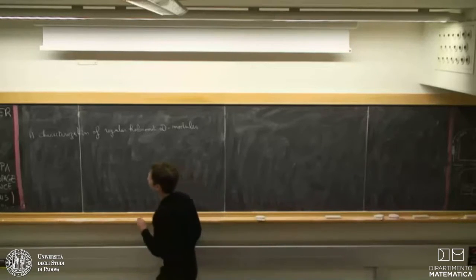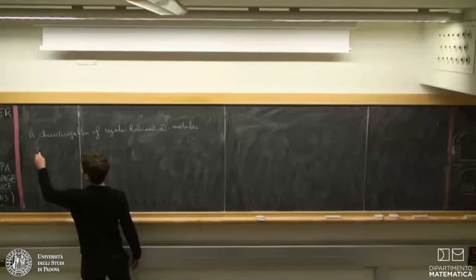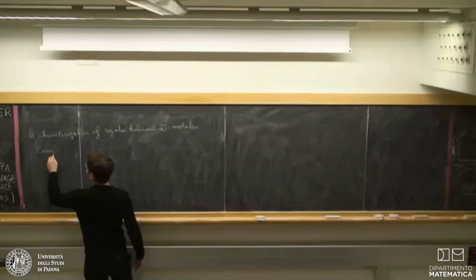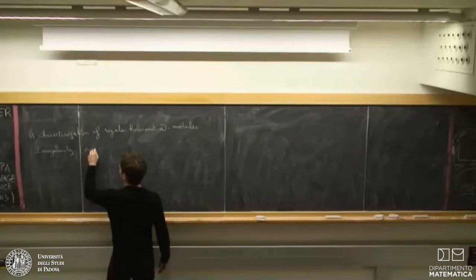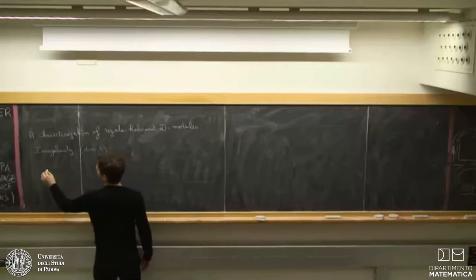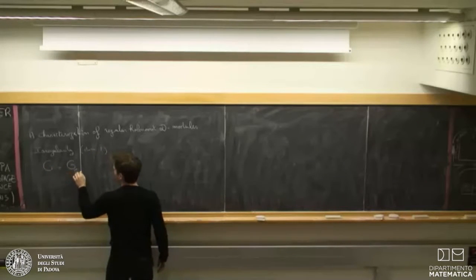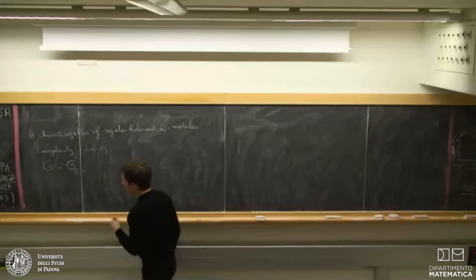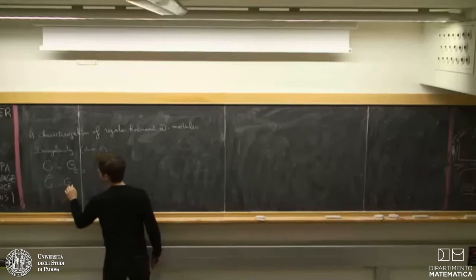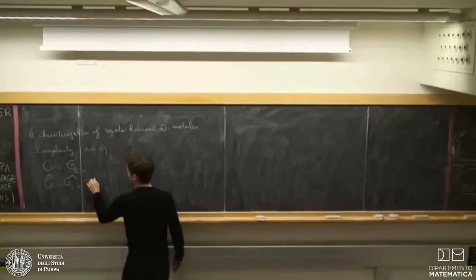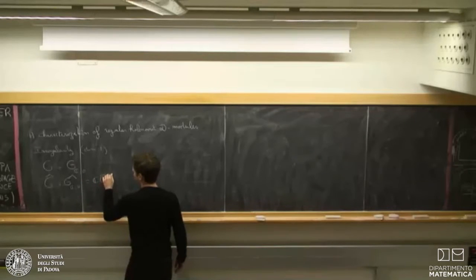So, I'll first recall what I call irregularities in this talk. First, in dimension one. O will denote the germs of holomorphic functions in the complex plane, germs at zero. I will denote by O hat its formalization, that is to say the ring of formal power series.